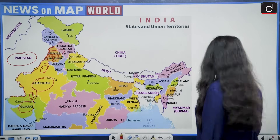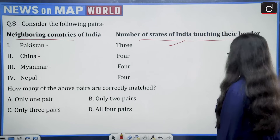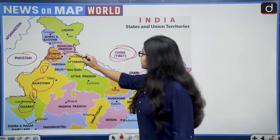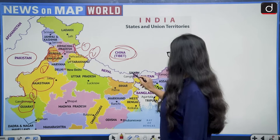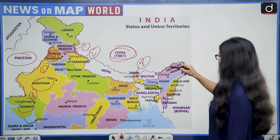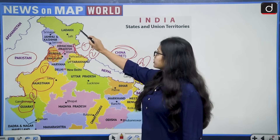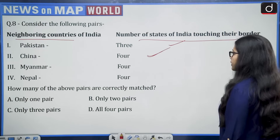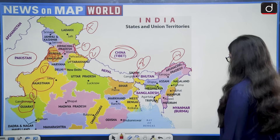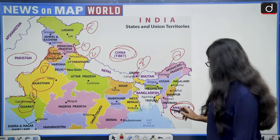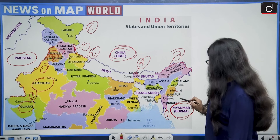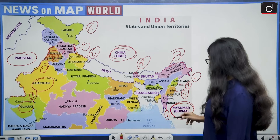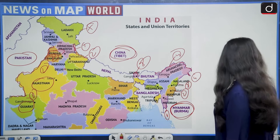Second: China — four states. The four states sharing border with China are Himachal Pradesh, Uttarakhand, Sikkim, and Arunachal Pradesh. Ladakh is a UT, so it is not counted. Four is correct. Third: Myanmar — four states. The four Indian states sharing border with Myanmar are Mizoram, Manipur, Nagaland, and Arunachal Pradesh. So this also becomes four — correct.